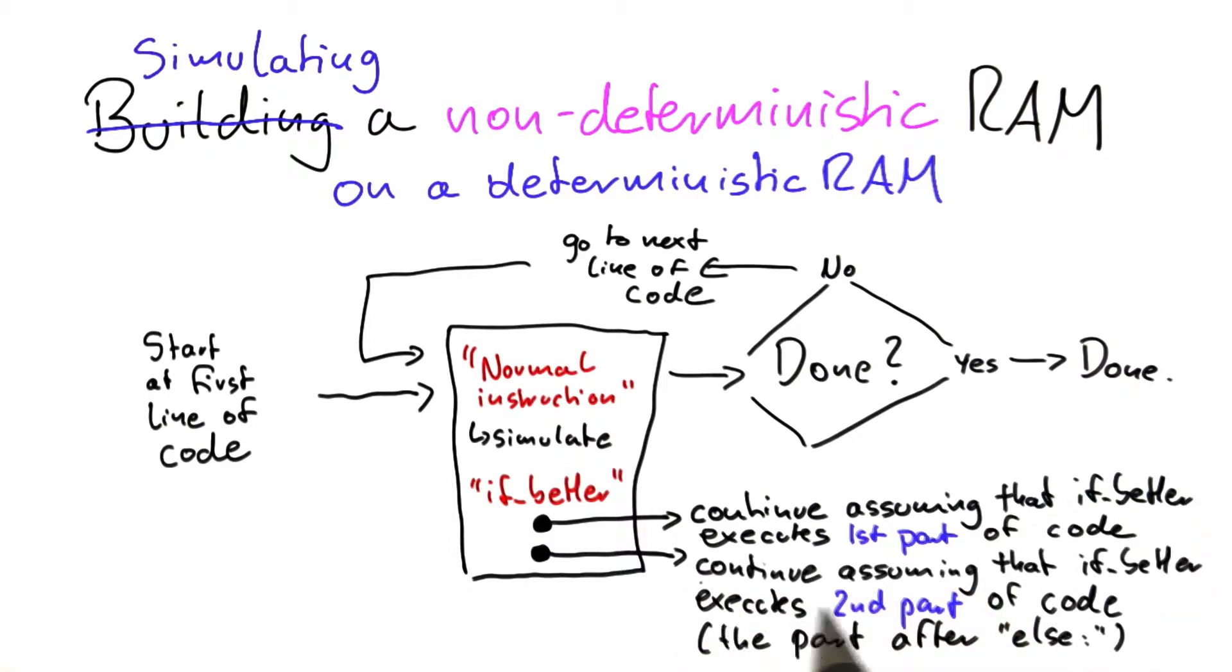And in the other case, it will continue assuming that the if better function executes the second part of the code. So the part that comes after the else statement. And of course, once you have this branching, you don't have one single simulation anymore. But you have to continue with two simulations.